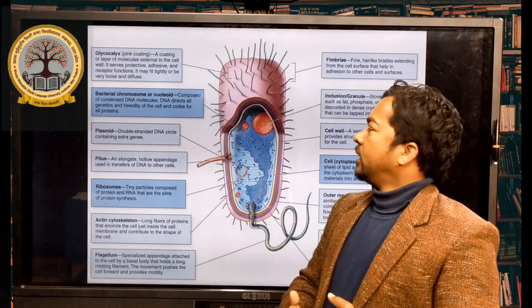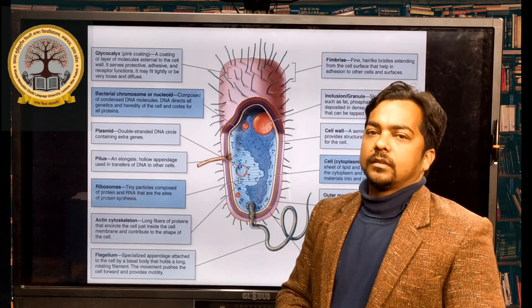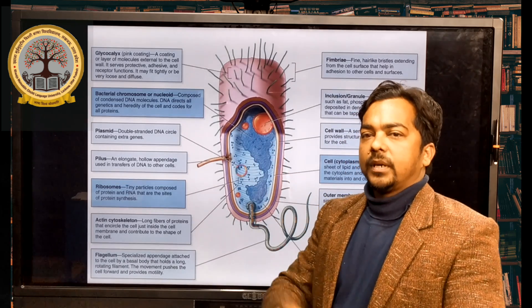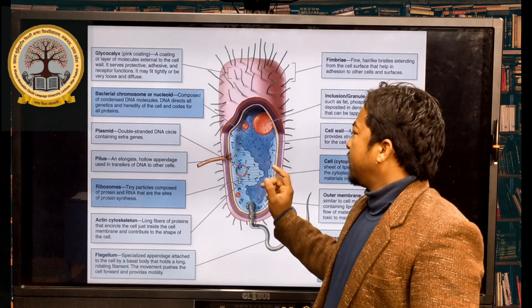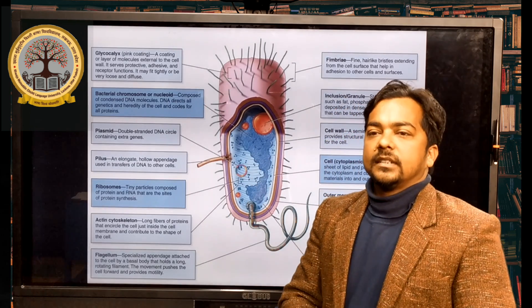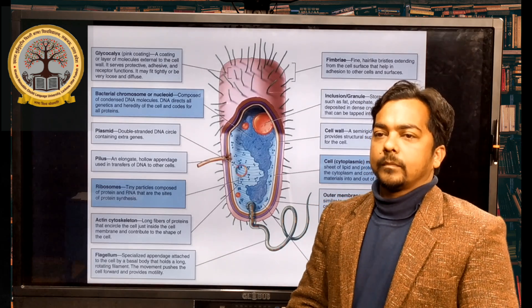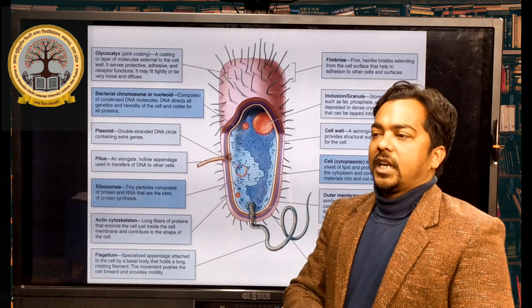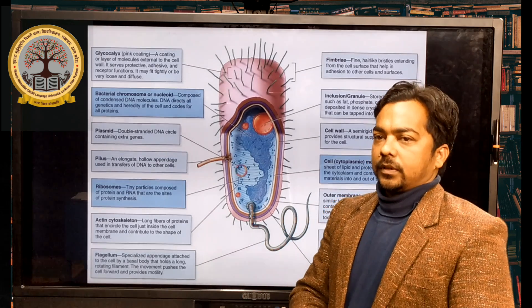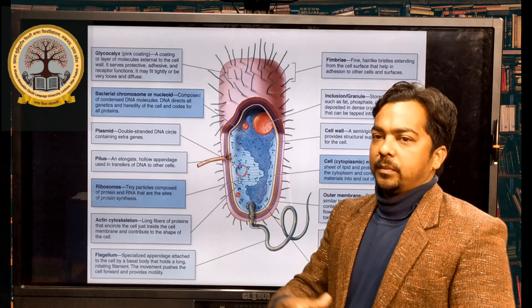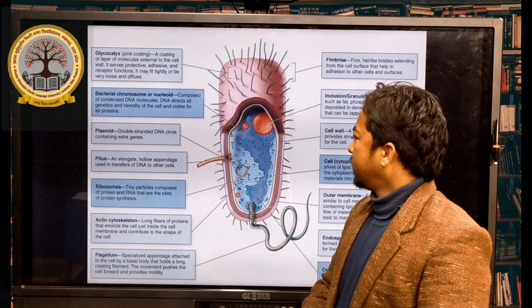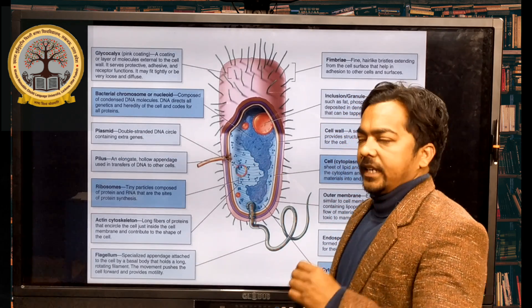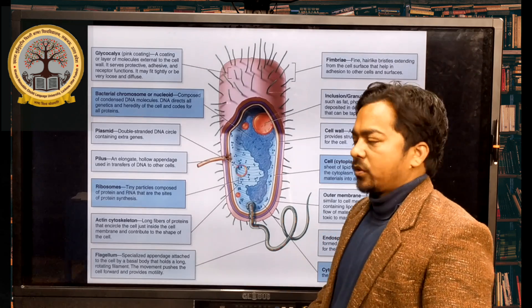One of the things found in prokaryotic cells is the plasmid. We already have genetic material in the nucleoid, but there is one additional structure found — the plasmid. In prokaryotic cells, these plasmids have another gene for resistance to antibiotics and other drugs. Plasmid has a double-stranded extrachromosomal DNA containing extra genes — it is an extra chromosomal structure.